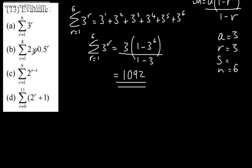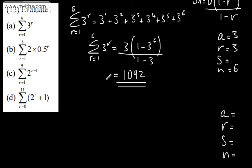Now let's look at the next one. This time we're summing from r equals 1 to r equals 8 of 2 multiplied by 0.5 to the power of r. I want to find a, r, s, and n. a is found by plugging in r equals 1: 0.5 to the power of 1 is 0.5, multiplied by 2 gives a equals 1. The ratio is 0.5. And since r goes from 1 to 8, there are 8 terms.